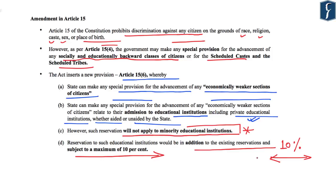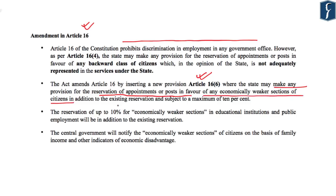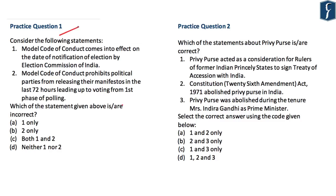Article 16 provides for prohibition of discrimination in employment in any government office. The Constitution 103rd Amendment Act has inserted Article 16(6), whereby the state may make provision for reservation of appointments or posts in favour of any economically weaker sections of citizens, in addition to existing reservations and subject to a maximum of 10 percent. Effectively, reservation of 10 percent to EWS members shall be provided in educational institutions as well as in public employment.